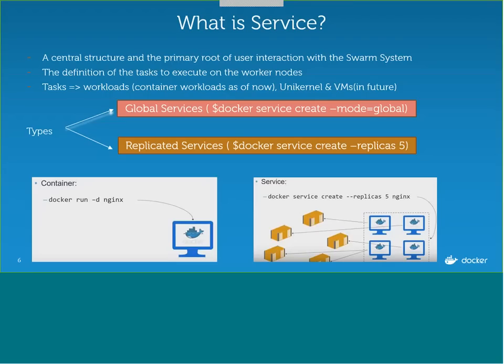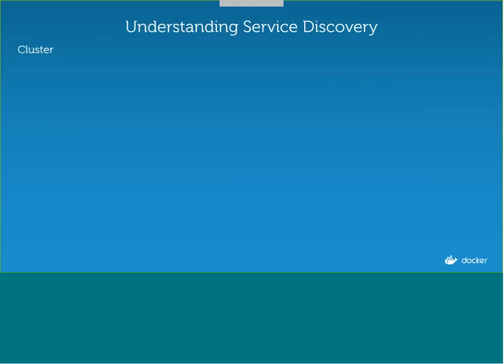Service is a first-class citizen here, and it basically creates a number of tasks which are nothing but containers, which get distributed across the cluster. There are two types of services: global services and replicated services. Global services means you want a container running on all nodes in the cluster. Replicated services means how many copies of containers you want to run across the cluster. This is something very new, introduced in Docker 1.12.